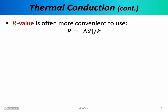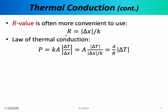In discussions of thermal conduction, both the thickness of the wall and the thermal conductivity of the material are quite important. Since both parameters are important, it's common to combine them into a single variable known as the R value. We can then express the law of thermal conduction in terms of the R value by moving K into the denominator and expressing delta X divided by K as the R value. The law of thermal conduction can now be expressed as: power equals area divided by the R value, times the difference in temperature.